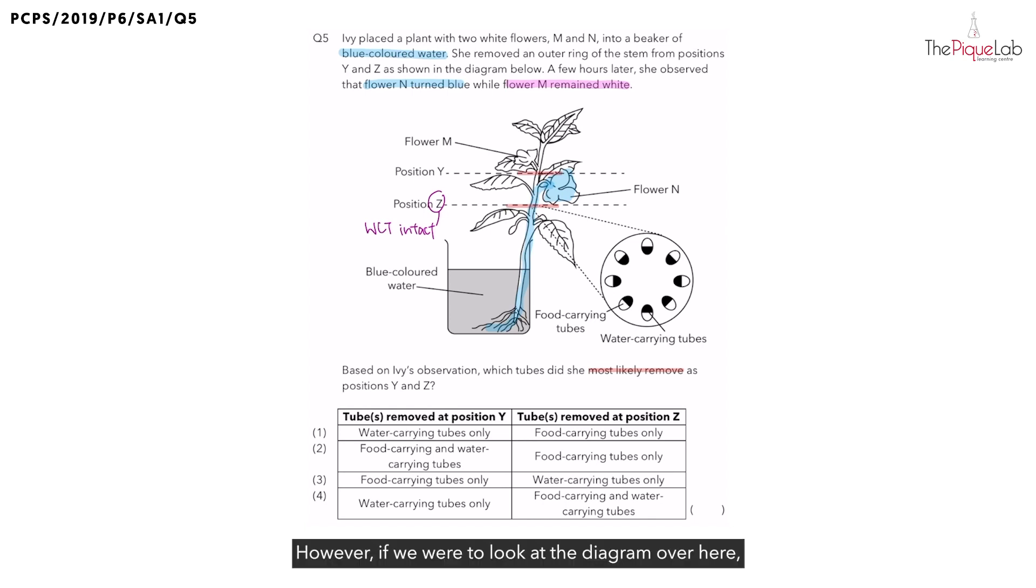However, if we were to look at the diagram over here, we see that the water carrying tubes are found on the inner ring, while the food carrying tubes are found on the outer ring.